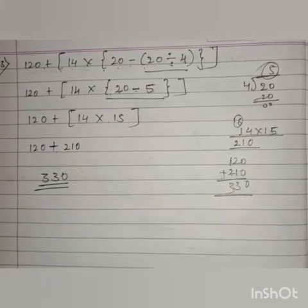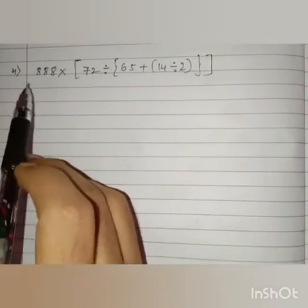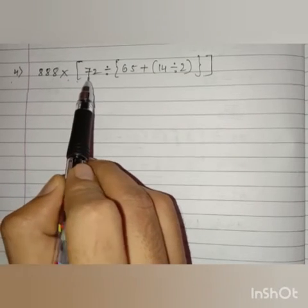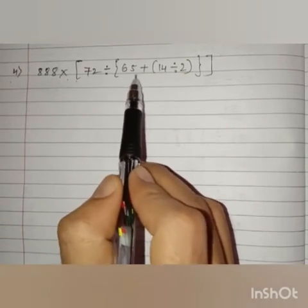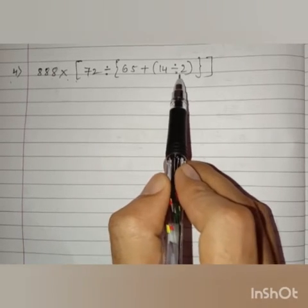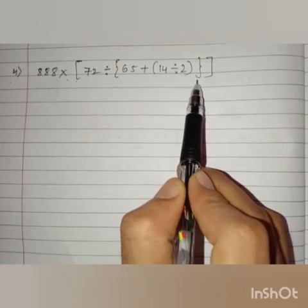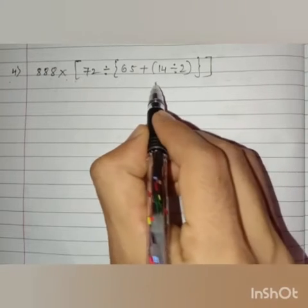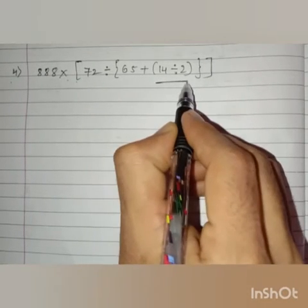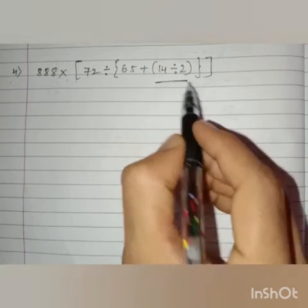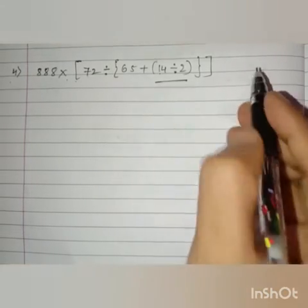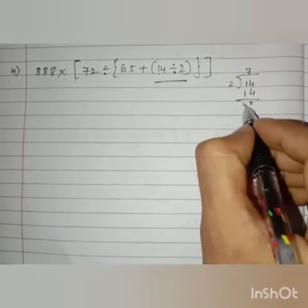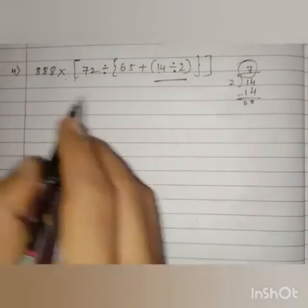Next, question number 4: 888 into big bracket open, 72 divided by curly bracket open, 65 plus small bracket open, 14 divided by 2, common bracket close, curly bracket close, big bracket close. First we have to remove the common bracket. The operation is division, so 14 divided by 2 — 2 times 7 is 14 — we get 7.